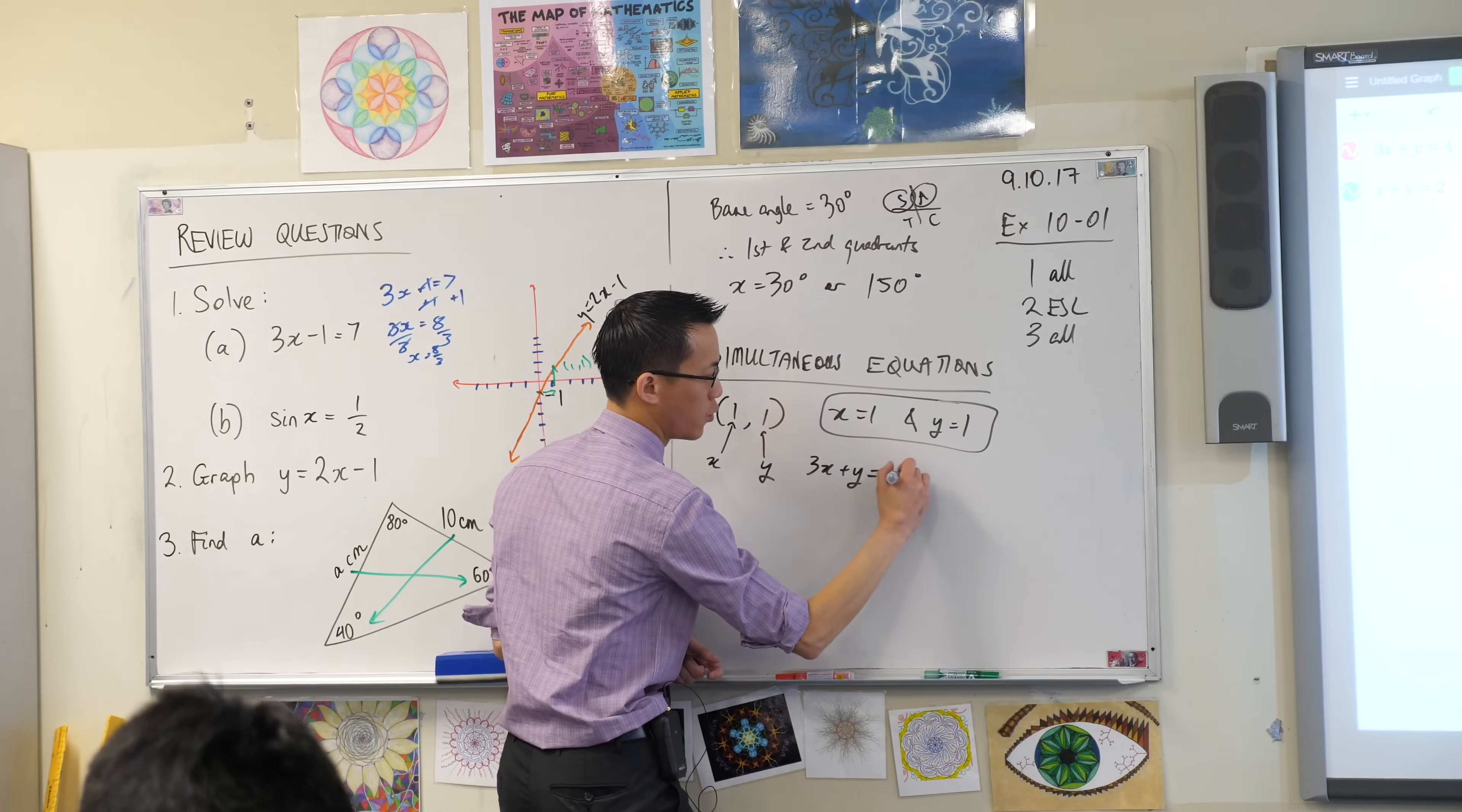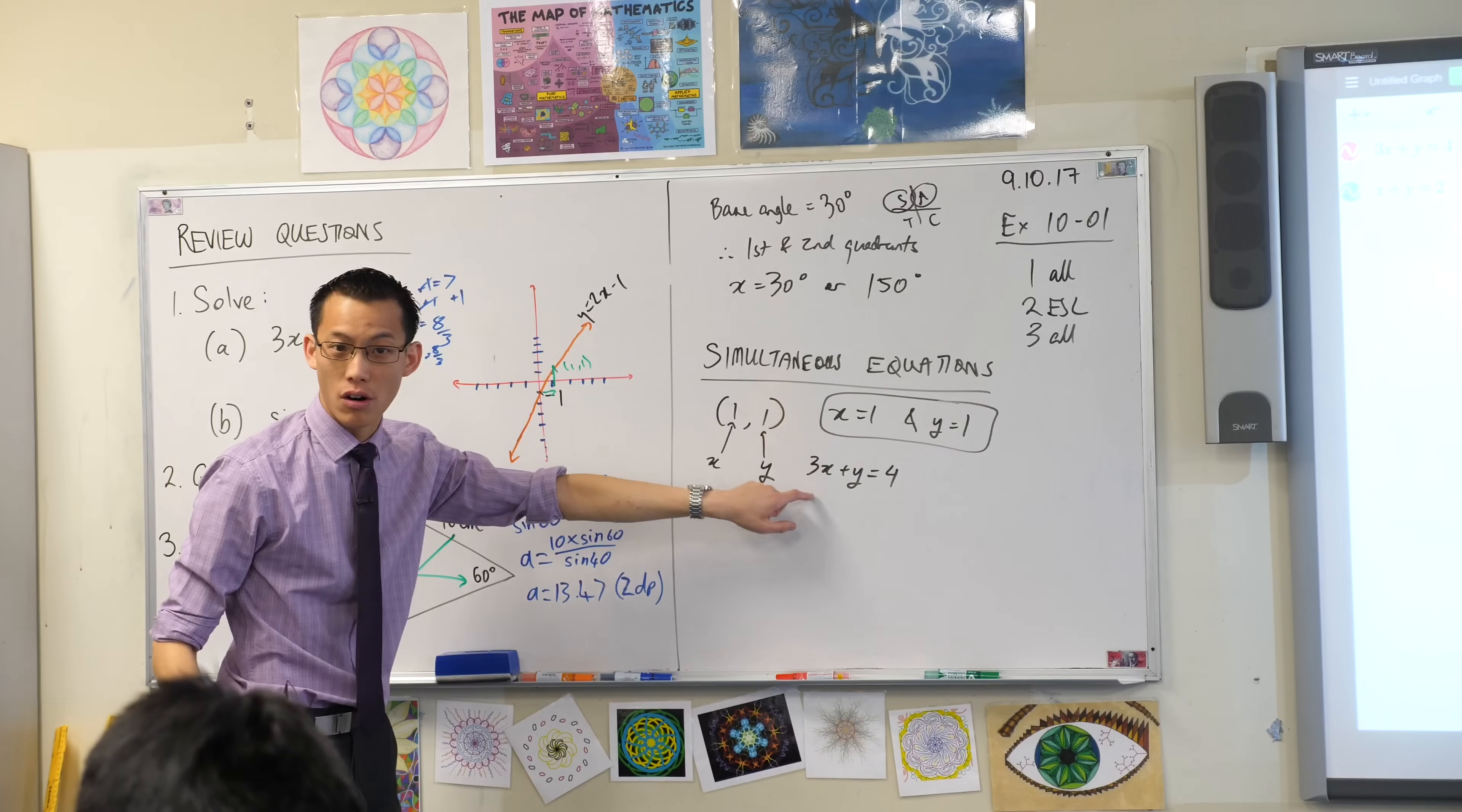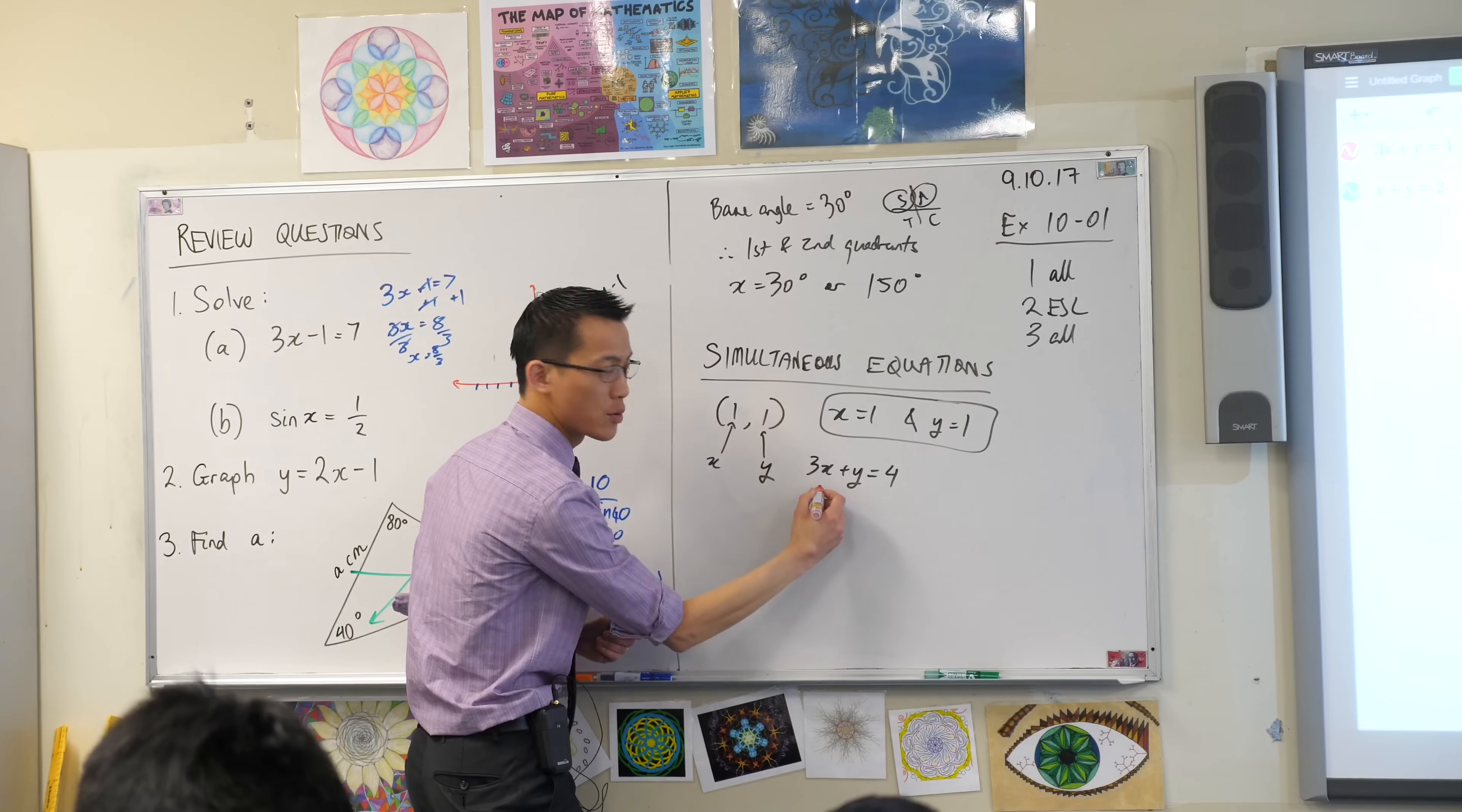3x plus y equals 4. 1, 1 is on this line. Have a look. What happens to the left-hand side? It becomes, I'll write it in a different color, 3 times 1, which is 3,